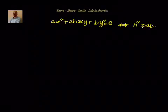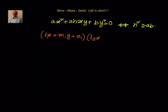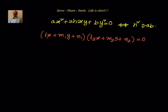So first, let us say ax² + 2hxy + by² = 0. We said that we can write it as a pair of straight lines. Let us say those straight lines are given by (L₁x + M₁y + N₁)(L₂x + M₂y + N₂) = 0. That means ax² + 2hxy + by² represents two independent straight lines: one is L₁x + M₁y + N₁ = 0, and another is L₂x + M₂y + N₂ = 0.